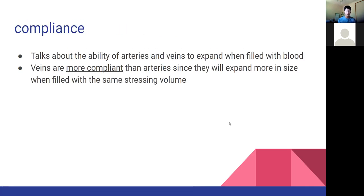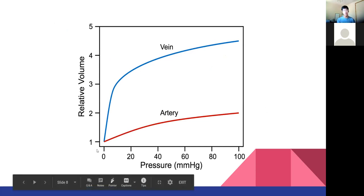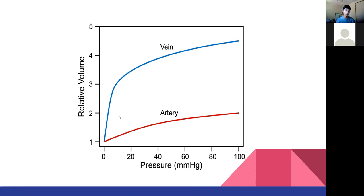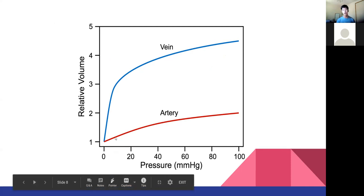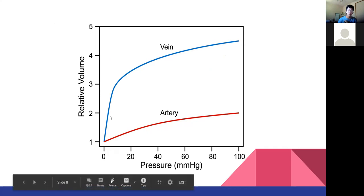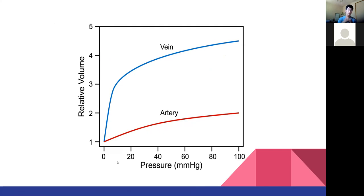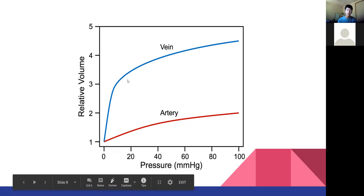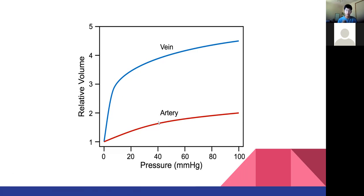In terms of compliance, it's best shown in this diagram. We're comparing pressure versus how easy it is to increase the volume of that space. Arteries are less compliant because as you increase the pressure, the lumen size won't increase that much. Whereas veins are highly compliant - a higher pressure will cause the relative volume of the vein to expand a lot more. You can picture a vein as a balloon that's really easy to blow up, whereas an artery is a lot tougher to expand.